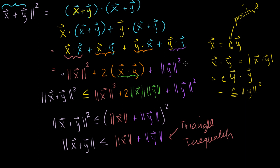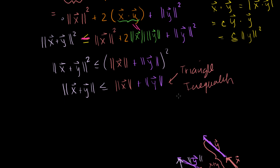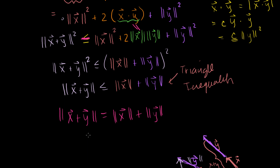So if this is equal to that, then the less-than-or-equal sign becomes an equal sign, and we have the limiting case: the length of x plus y equals the length of x plus the length of y, in the situation where x equals some positive scalar c times y, with c > 0. These two conditions imply each other, and we saw that geometrically — equality holds only when they're collinear.